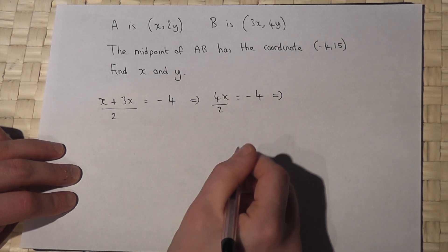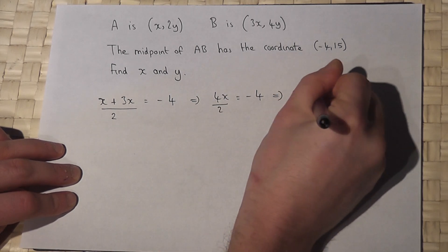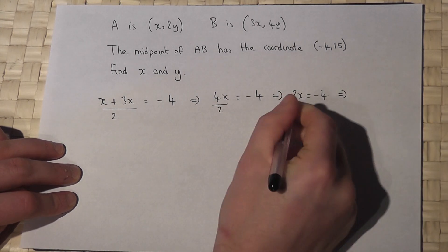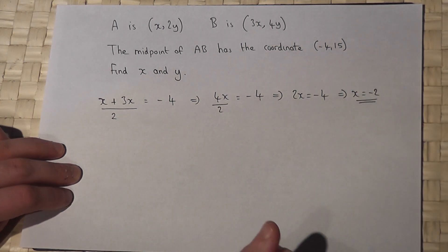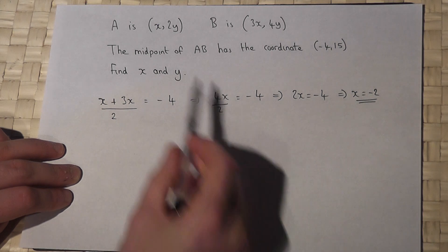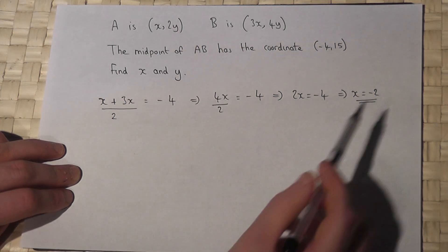Now 4 over 2 is 2, so 2x equals minus 4. So if I divide by 2, x equals minus 2. Therefore, I've found the value of x has got to be minus 2.